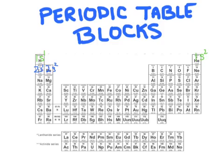If we kept on moving through the periodic table, we'd come to boron. The last thing we would write in boron's electron configuration would be 2p1, to account for its 5 electrons. Notice that boron has everything that the previous elements had, plus its highest energy electron.